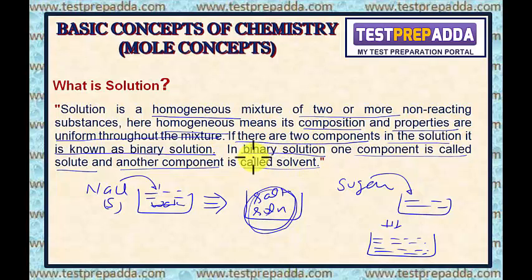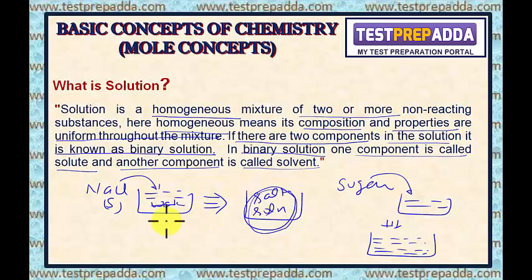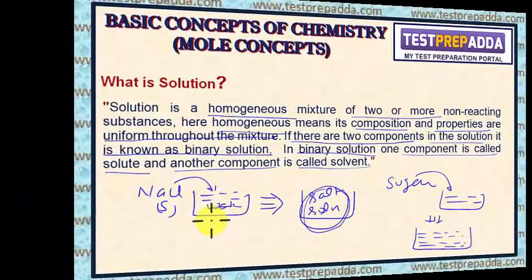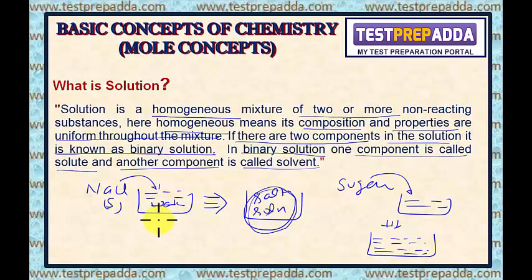In binary solution, one component is solute and another component is solvent. A question arises: in a mixture, how do we decide which component is solute and which is solvent? You may say that solvent is the component which dissolves the solute, and solute is the component which is dissolved in the solvent.